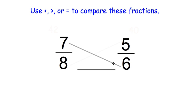We're going to do 6 times 7 is 42. Then we're going to do 8 times 5 is 40. And now we simply just compare the numbers that we just came up with. So we're comparing 42 to 40.